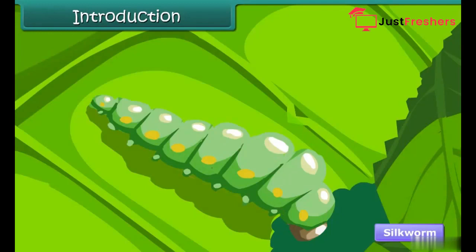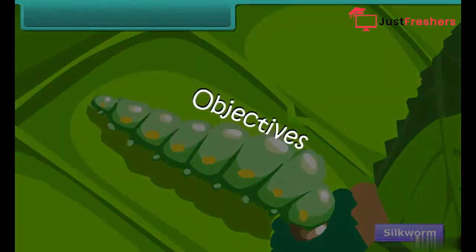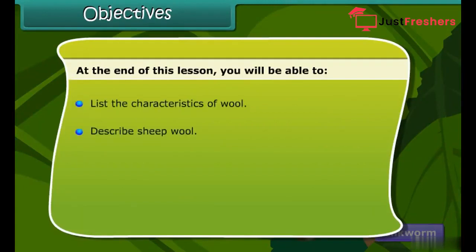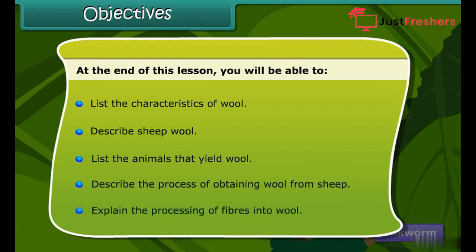In this lesson, we learn about an animal fiber, namely wool, in detail. Objectives: At the end of this lesson, you will be able to list the characteristics of wool, describe sheep wool, list the animals that yield wool, describe the process of obtaining wool from sheep, and explain the processing of fibers into wool.